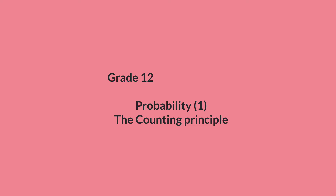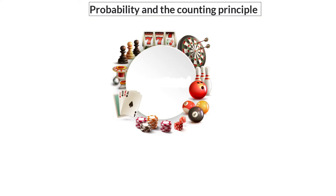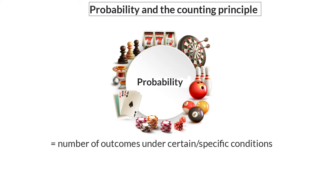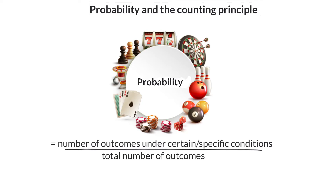In this video, we are starting with Grade 12 probability by having a look at the counting principle. To calculate the probability that an event will occur under certain conditions, we need to know the number of outcomes under these specific conditions, as well as the total number of outcomes. Determining this number of outcomes can sometimes be challenging, and that is why we are going to have a look at the counting principle.